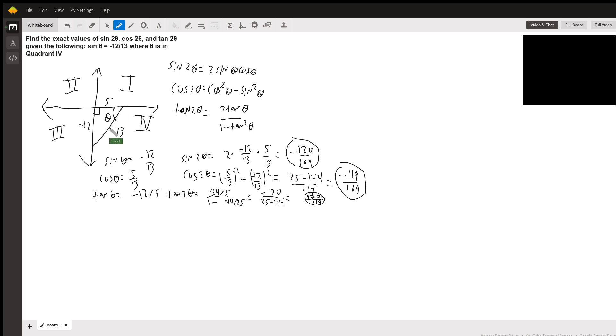Sine θ is -12/13 as given in the problem, which means cos θ is 5/13 (positive), and tan θ is -12/5. Then we simply plug these values into the formulas.